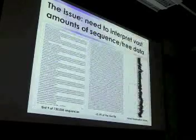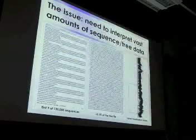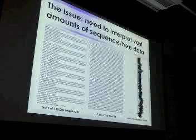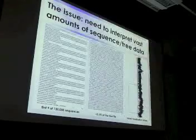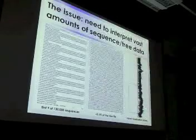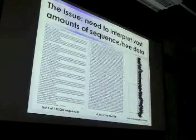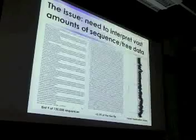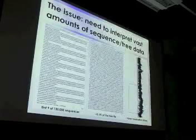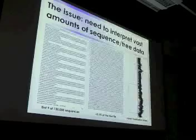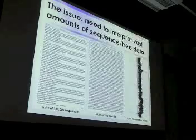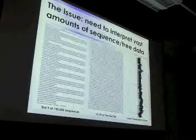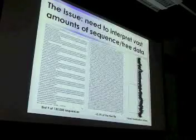You wind up with all this data. What I'm showing you here — those of you who have been to this meeting before have seen this example — is a project we did with Noah Fierer's group a couple of years ago. Just to show you the scale of the problem: here's the first 9 of 130,000 sequences we collected. Here's the first 0.1% of the file containing the genetic tree, and here's a visualization of that tree. You can immediately tell you've got a lot of work cut out for you — it's very hard to understand the data in this format.